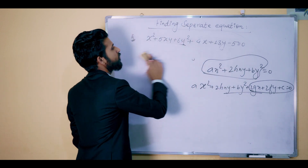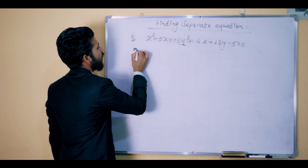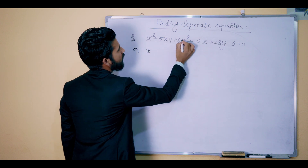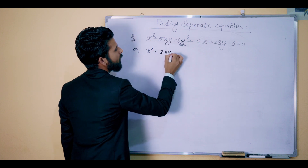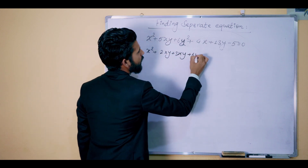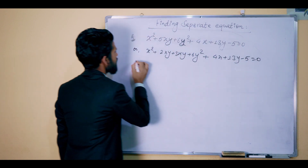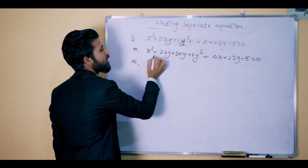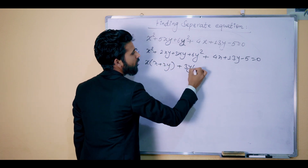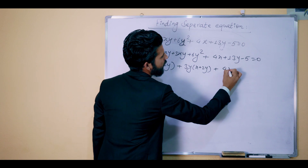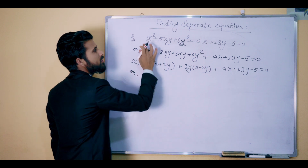We factorize: x squared plus 5xy plus 6y squared plus 4x plus 13y minus 5 equals 0. We split the middle term — 2xy plus 3xy plus 6y squared plus 4x plus 13y minus 5 equals 0. This step is to factorize, and it is not easy for everyone to do it correctly.